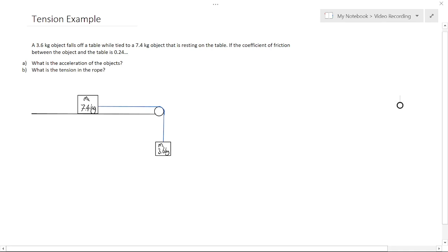Hello nerds. Today we're looking at a tension example. We have a 3.6 kilogram object falling off a table while tied to a 7.4 kilogram object that is resting on the table. If the coefficient of friction between the object and the table is 0.24,